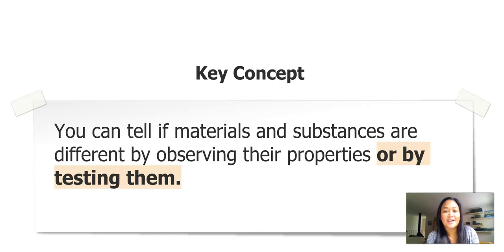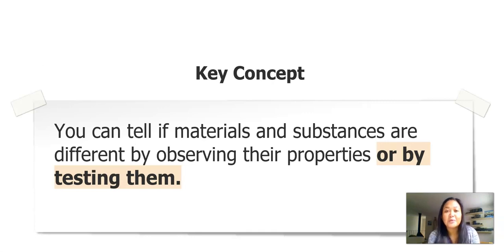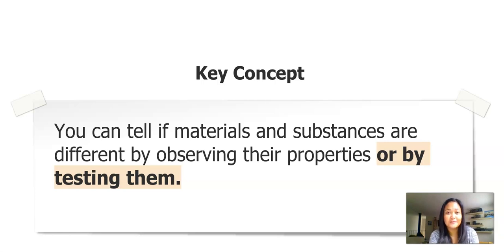You can tell if materials and substances are different by observing their properties or by testing them. If you remember from last lesson, you did a sticky test. By doing the sticky test, it helps you observe and test properties of materials.